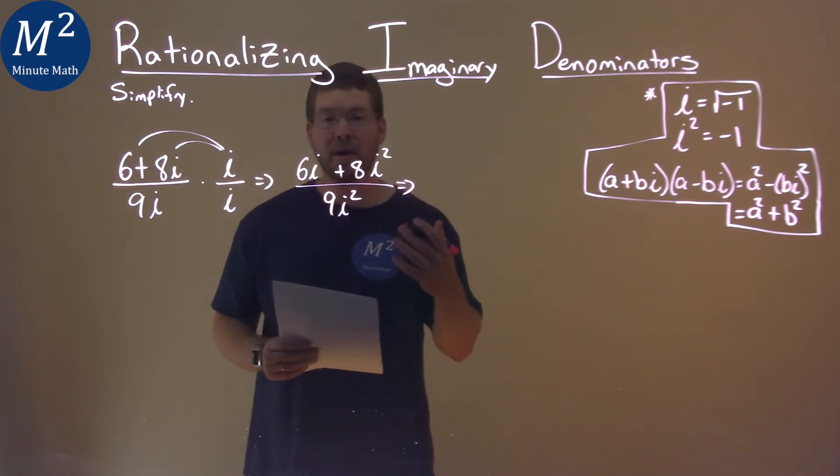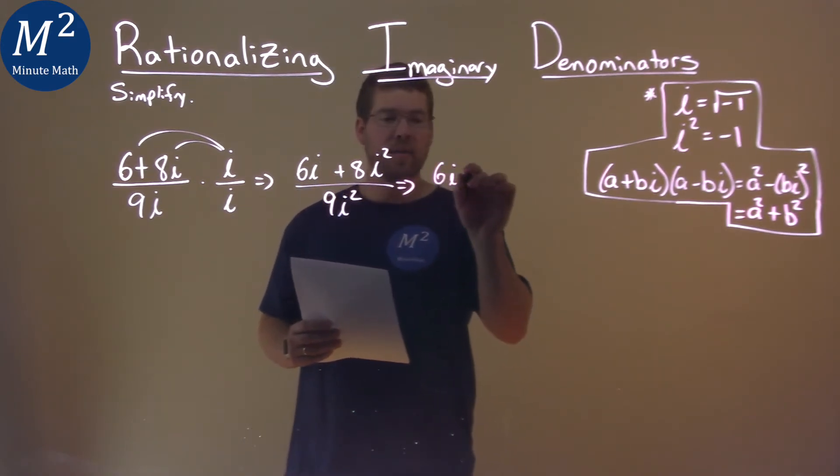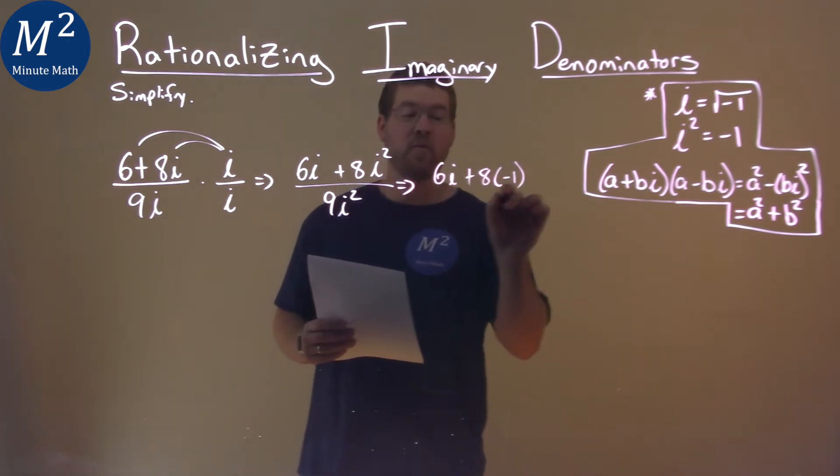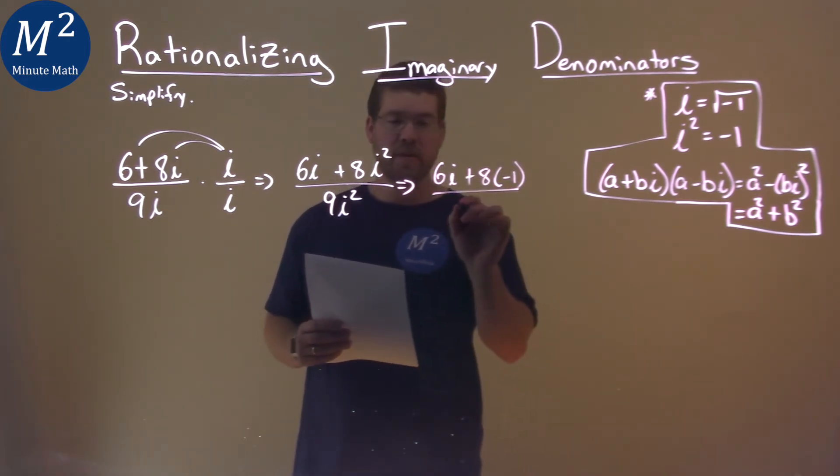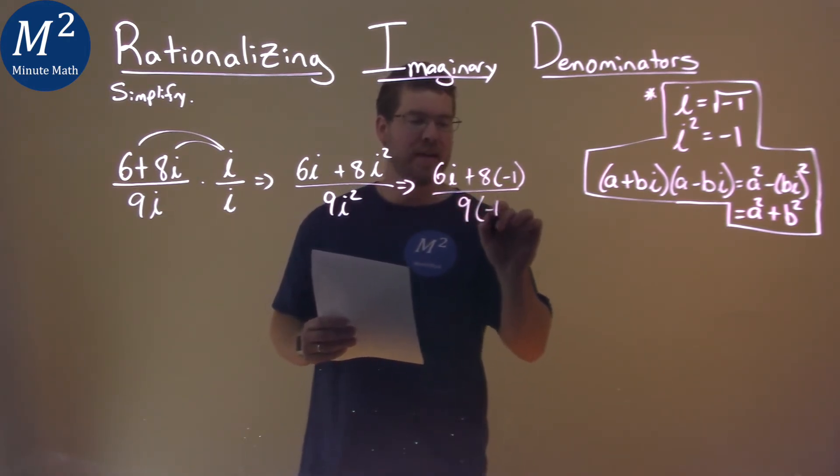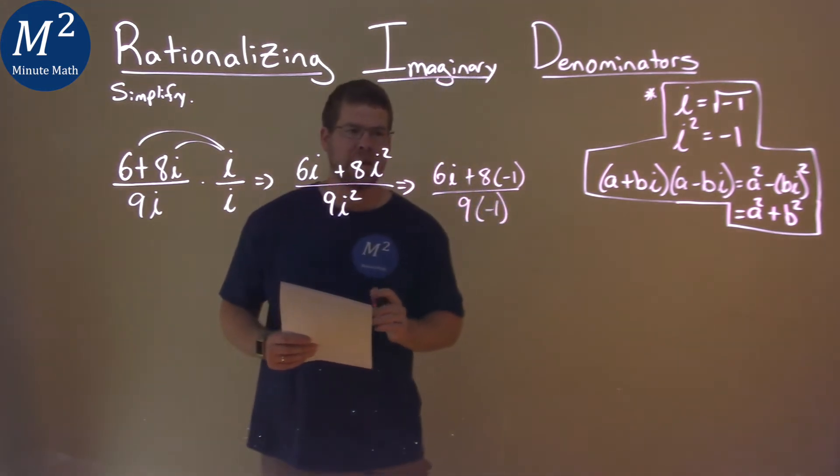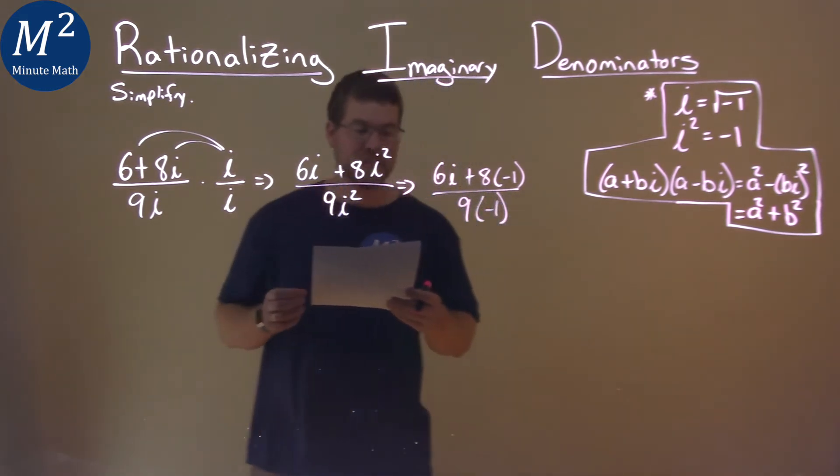i squared is equal to negative 1. So 6i plus 8 times negative 1 over 9 times negative 1. And now it's pretty easy to simplify.